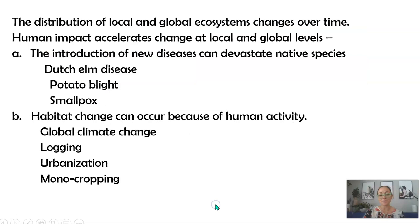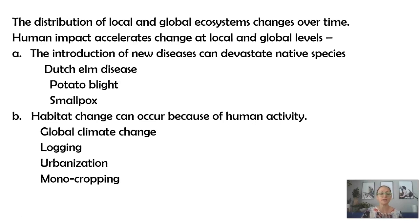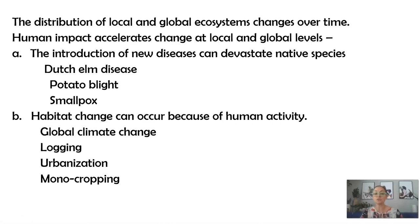Here are some College Board standards. Part A ties in with our discussion on invasive species — certain diseases can devastate native species. Habitat change can occur because of human activity. We've talked about global climate change, but also logging, deforestation, urbanization, and monocropping from part one. Let's go ahead and talk about Dutch elm disease and potato blight and how introducing diseases can devastate native species.